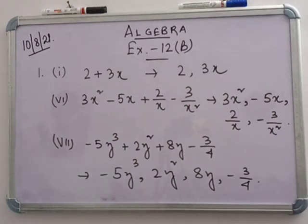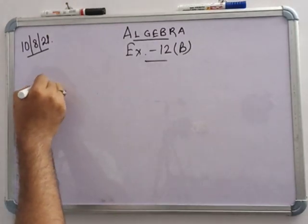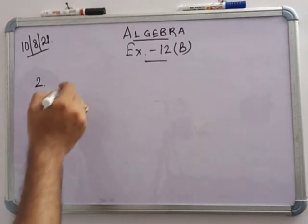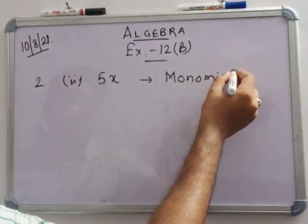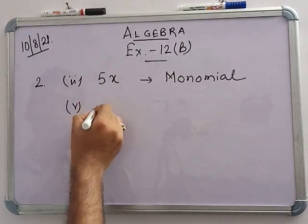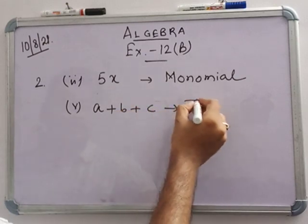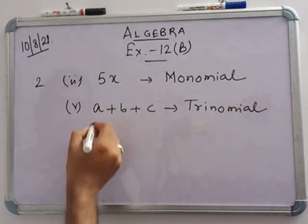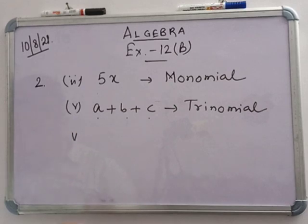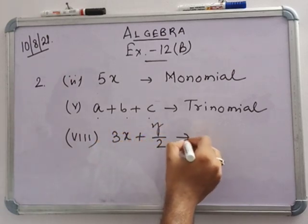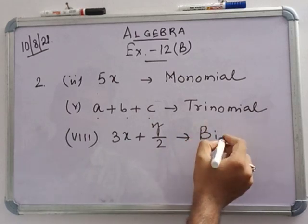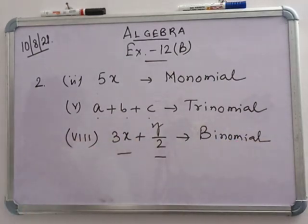In question 2, identify the monomial, binomial, or trinomial. Number 5: 5x is a monomial. Number 5: a plus b plus c is a trinomial because three terms are there. Number 8: 3x plus y by 2 is a binomial because two terms are there.